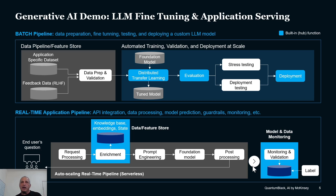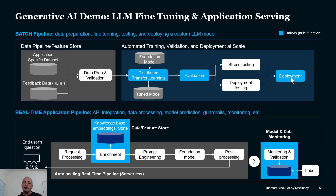This tuning step takes the base foundation model, does transfer learning, and adds some layers that understand your specific data, generating the tuned model. Once that's done, you evaluate it to verify it's doing the right thing, run lots of testing to confirm it's not misbehaving, and finally automatically deploy that version to production using automated deployment. That's the batch pipeline for building and deploying the model.